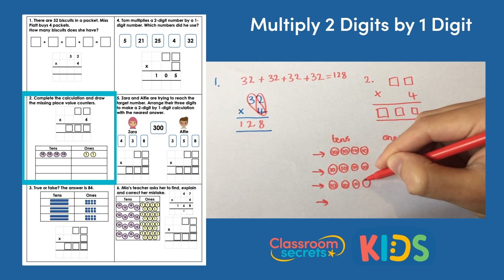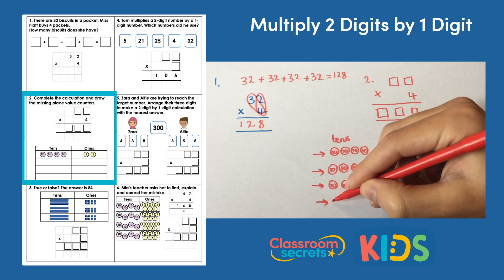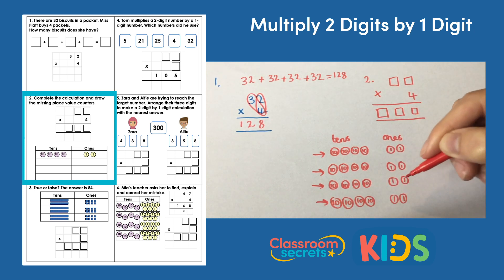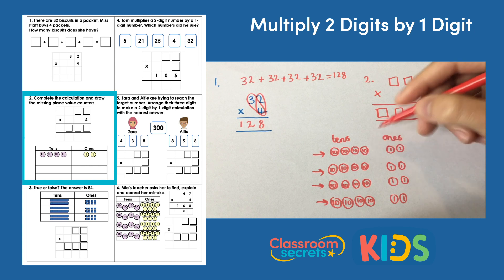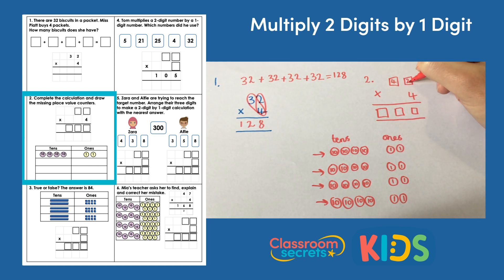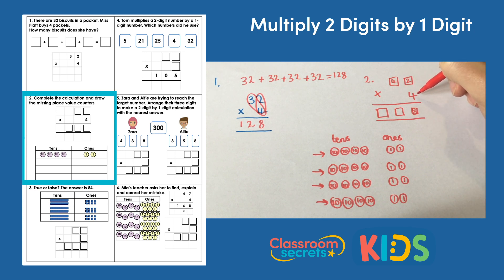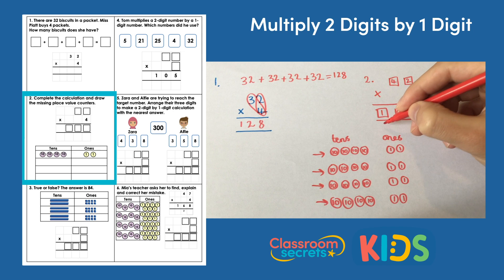Four lots of 42 is the same as 42 add 42 add 42 add 42 — that's the repeated addition way. So there we have our four lots of 42 using place value counters. We know it's 42 in one lot, so we put that into our calculation: 42 multiplied by four. Starting at the ones, two times four is eight; four times four is 16, and that goes straight in. So our answer is 168.